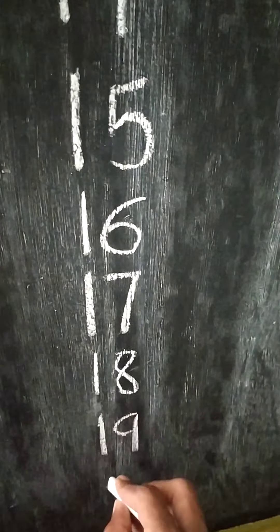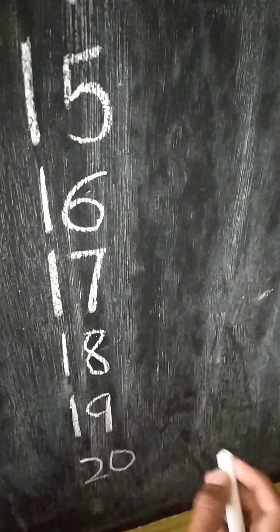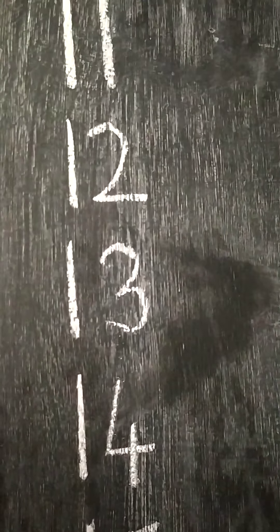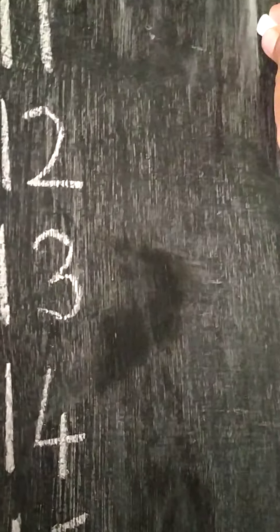19, 19 and 20. Now how to write 11 to 20? First you write 1, then 1. 1, 1, 11.